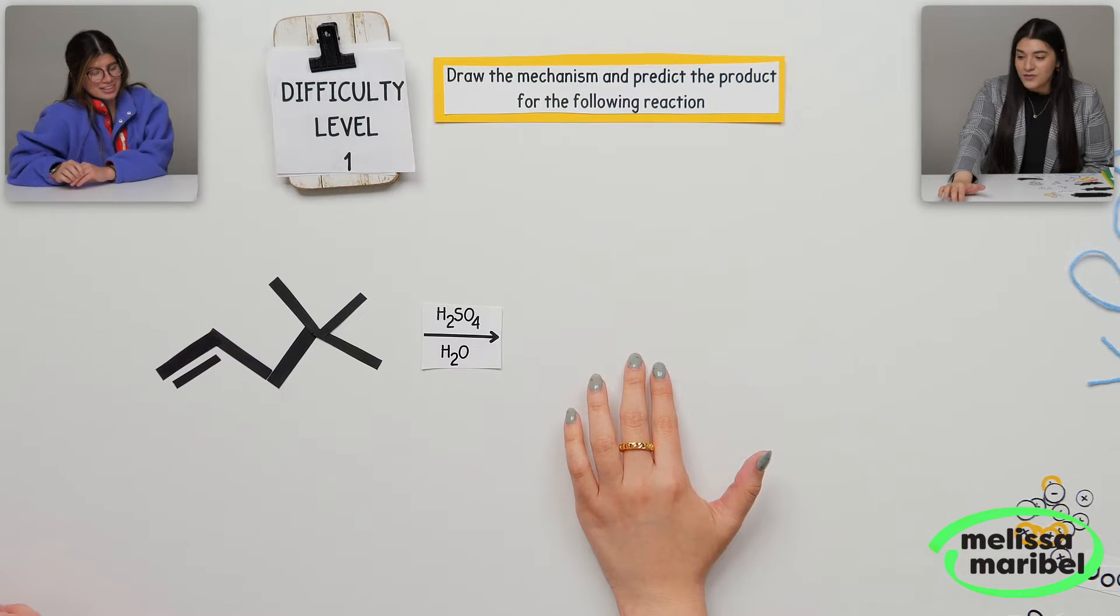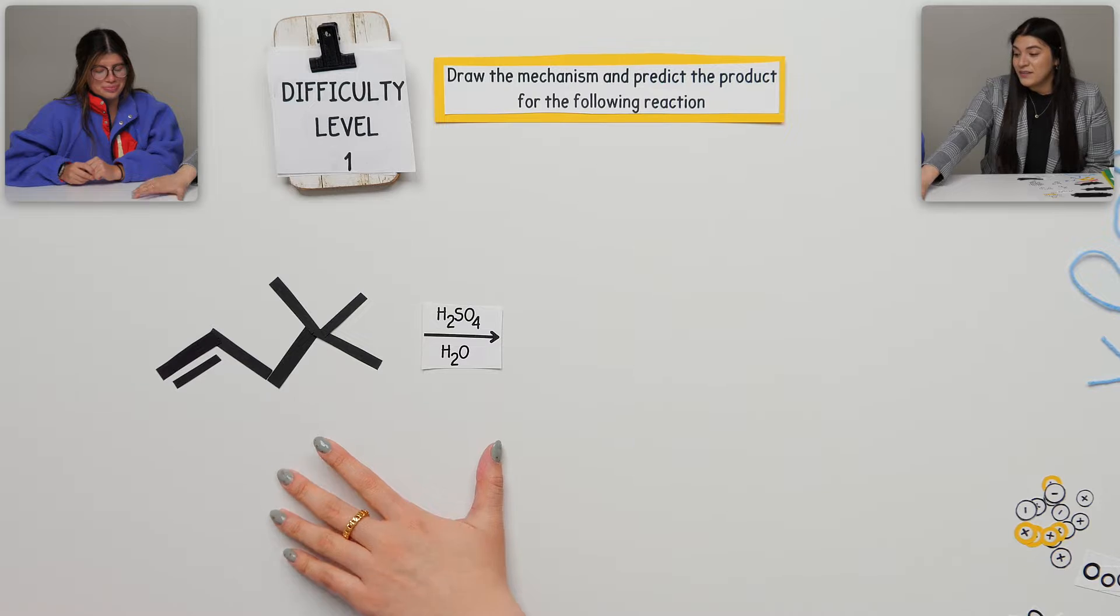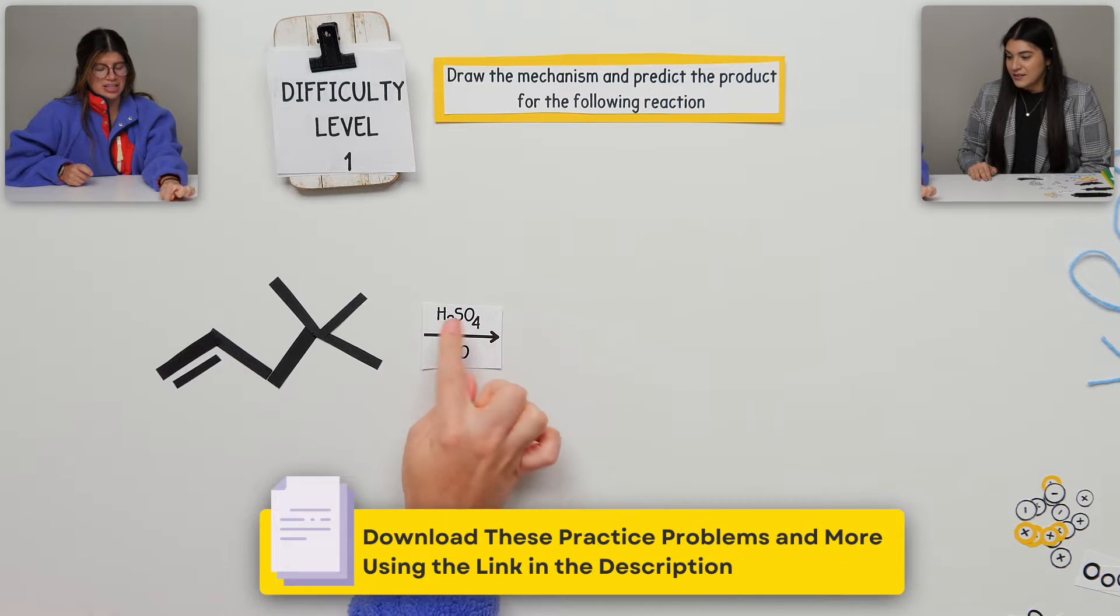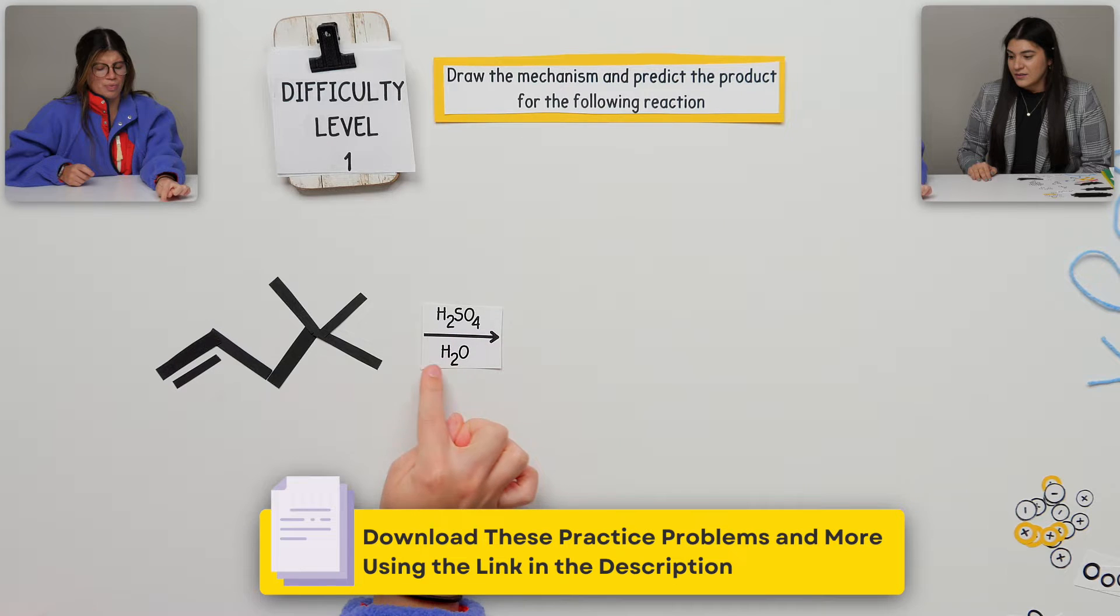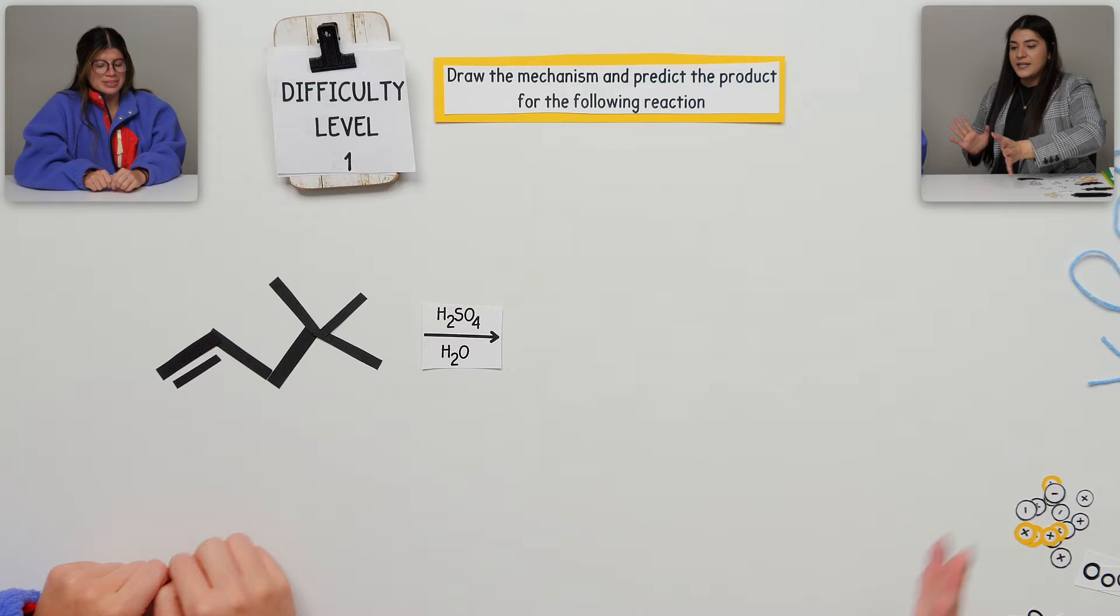Draw the mechanism and predict the product for the following reaction. So looking at this, what can you tell me, what happens in this reaction? It's going to react with this and then the water. Are we looking at the bonds first? Yeah, what do you think is going to happen? What will the product be?